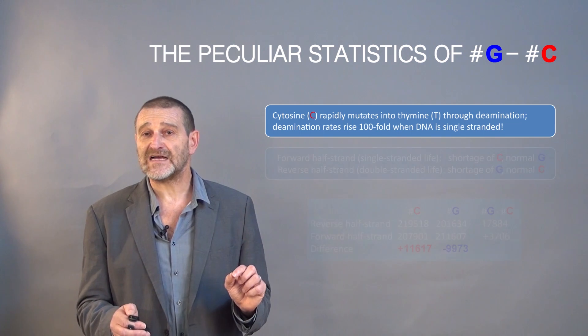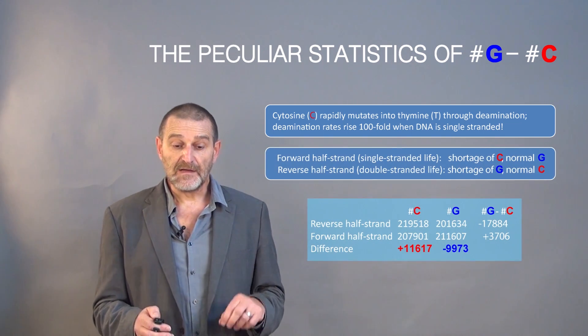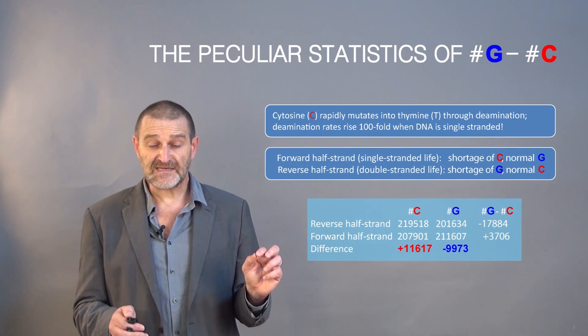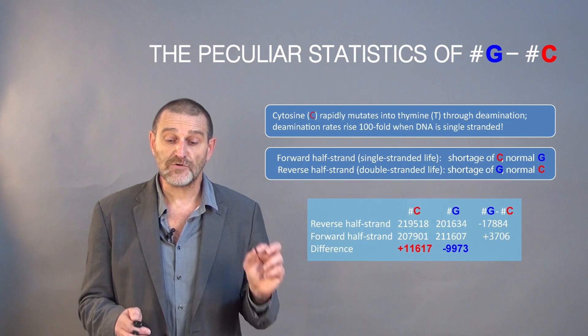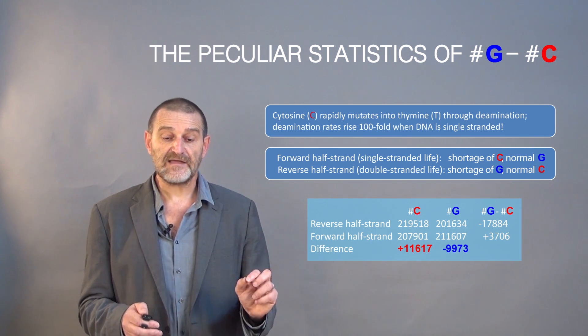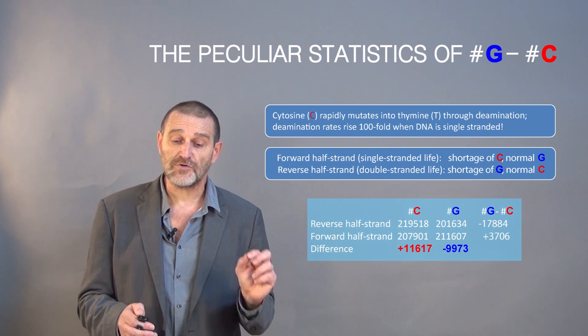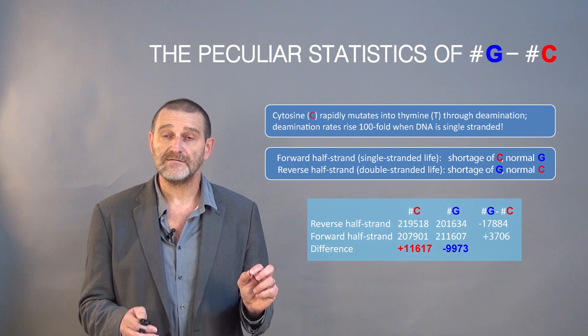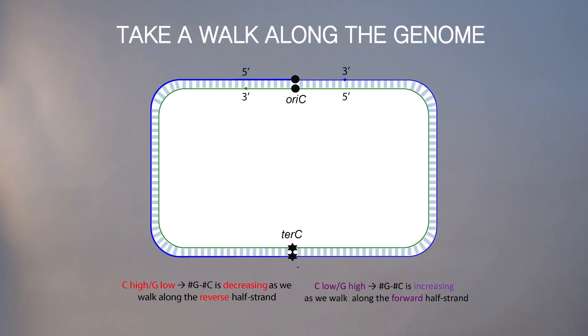What does it mean for us as algorithm designers? Forward half strands that live single-stranded life have shortage of C and normal G. Reverse half strands that live double-stranded life have shortage of G and normal C.